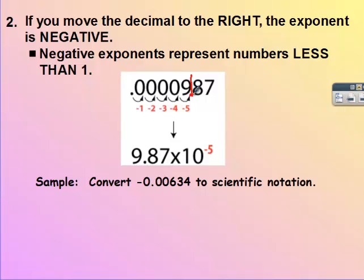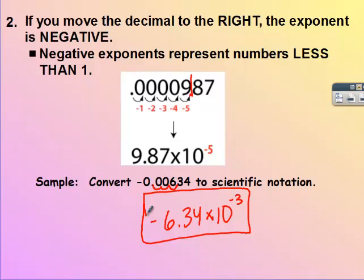So we get 9.87 times 10 to the negative 5. In our sample problem, we're trying to move the decimal between the 6 and the 3. So it's going to be 6.34 times 10 to the 1, 2, 3. Since it was less than 1, that's negative 3. Can you tell what I forgot on this one? If you said the negative sign in front, then you are correct. In this case, this number was less than 0 because it had a negative sign. So we do bring that negative sign down.